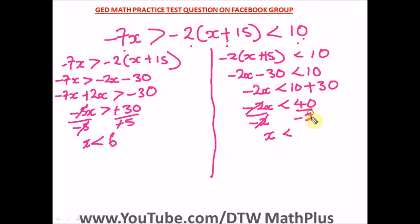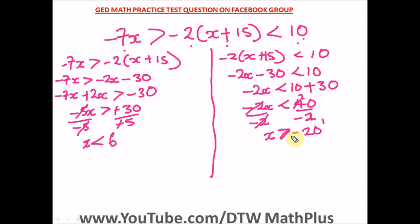Negative 2 cancels out negative 2, and 40 divided by 2 is 20. There's no negative on top to cancel out the negative, so we keep it negative 20. And remember — when you divide by a negative sign the inequality sign changes, so less than becomes greater than. Our second answer is x greater than negative 20.